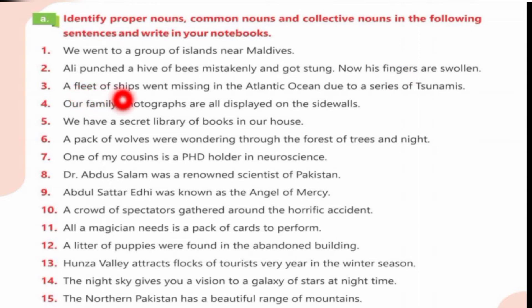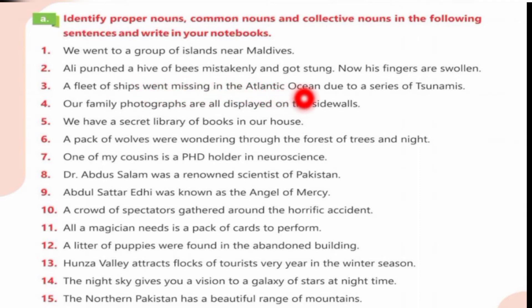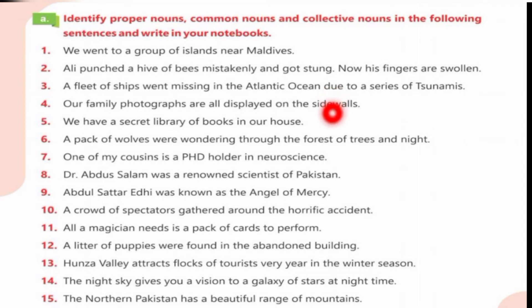Our fleet of ships went missing in the Atlantic Ocean due to a series of tsunamis. 'Fleet of ships' is a collective noun. 'Atlantic Ocean' is a proper noun. 'Tsunamis' is also a proper noun. Our family photographs are displayed on the side walls — 'family photographs' is a proper noun and 'side walls' is a common noun.